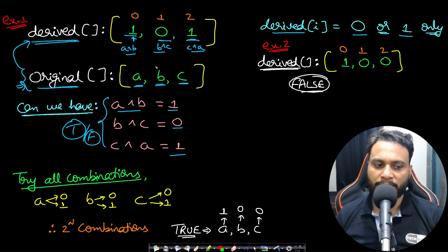So in order to solve this problem, what we can do is we can try all the possible combinations for a. So a can have two possible values: 0 or 1. Again, b can have two possible values: 0 and 1, and c can also have two possible values.